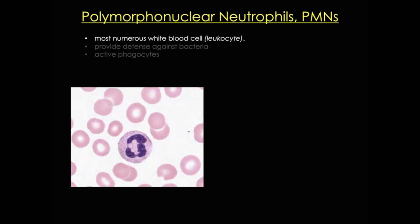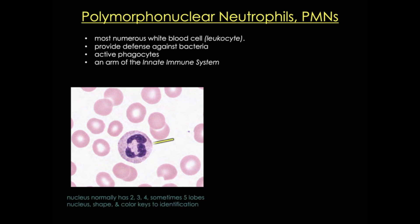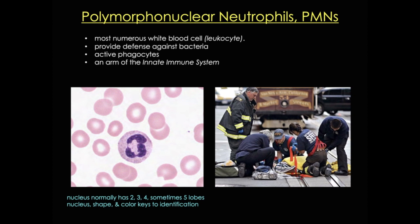They're short-lived, only living about 6–8 hours in the blood and only a couple of days in tissues. They're active against bacteria, they act as killing machines and phagocytes, and they are an arm of the innate immune system. They are easily the most recognizable white blood cell with their very characteristic highly-lobed nucleus. Importantly, they're usually the first white blood cells to arrive at sites of infection, actively pursuing bacteria by chemotaxis. I think of these first responders as the EMTs of the body.